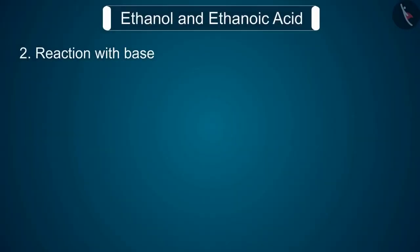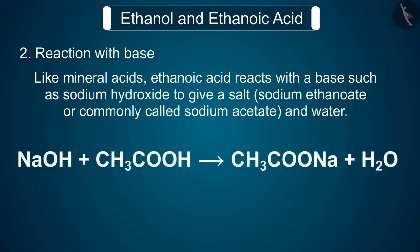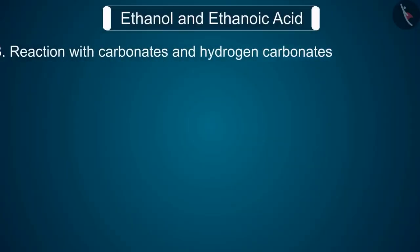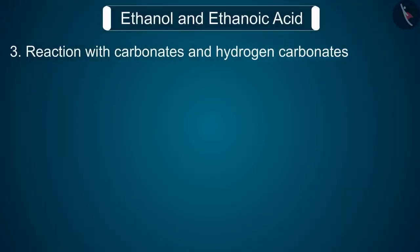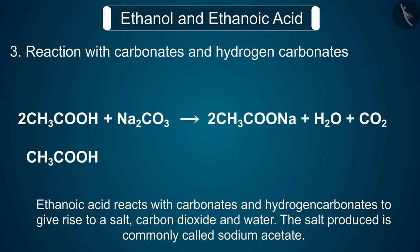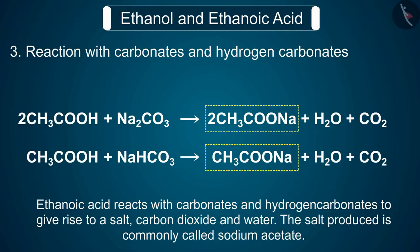Reaction 2: Reaction with base. Like mineral acids, ethanoic acid reacts with a base such as sodium hydroxide to give a salt, sodium ethanoate (commonly called sodium acetate) and water. Reaction 3: Reaction with carbonates and hydrogen carbonates. Ethanoic acid reacts with carbonates and hydrogen carbonates to give rise to a salt, carbon dioxide and water. The salt produced is commonly called sodium acetate.